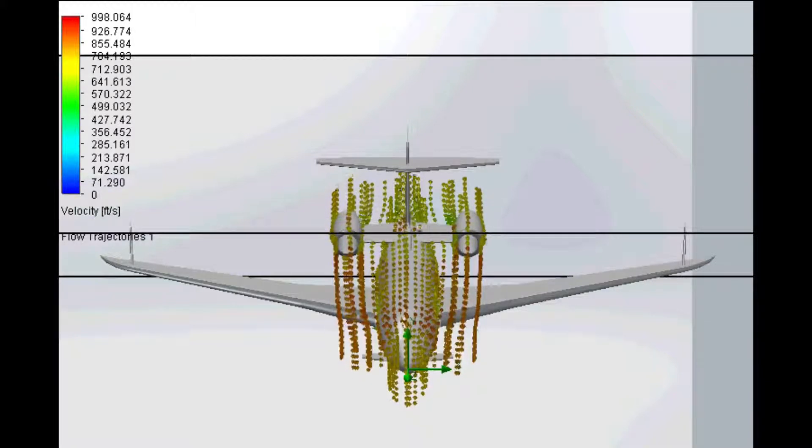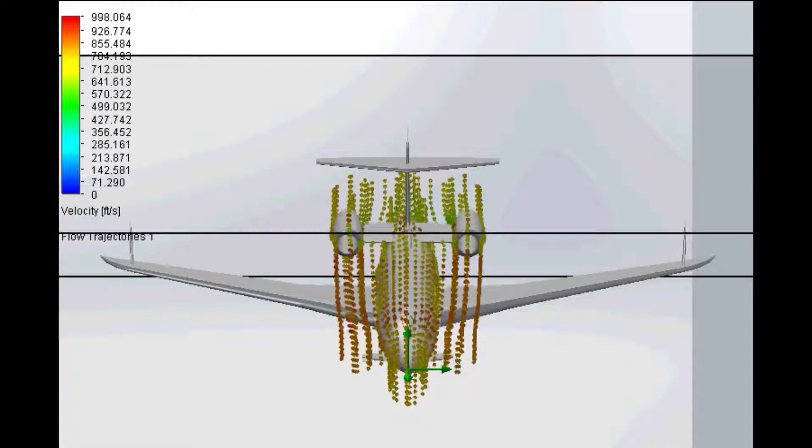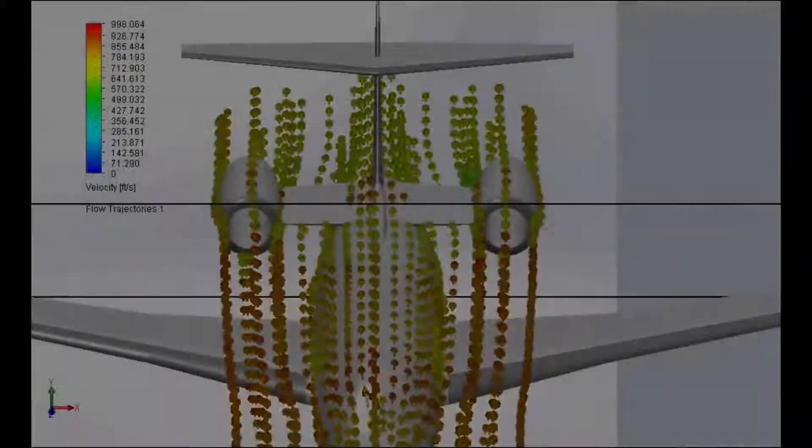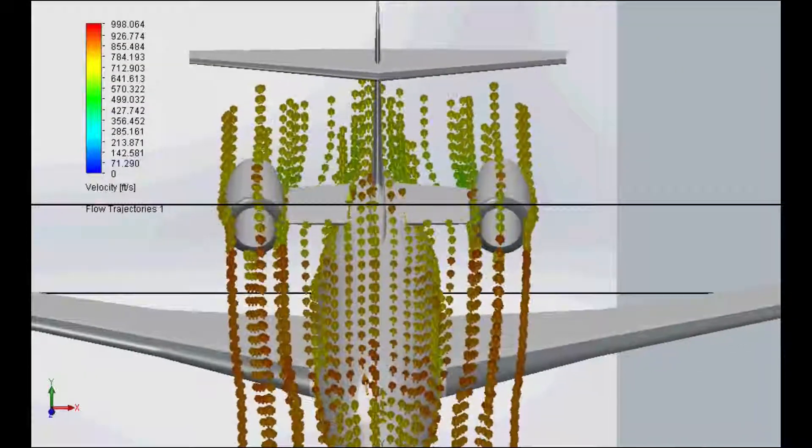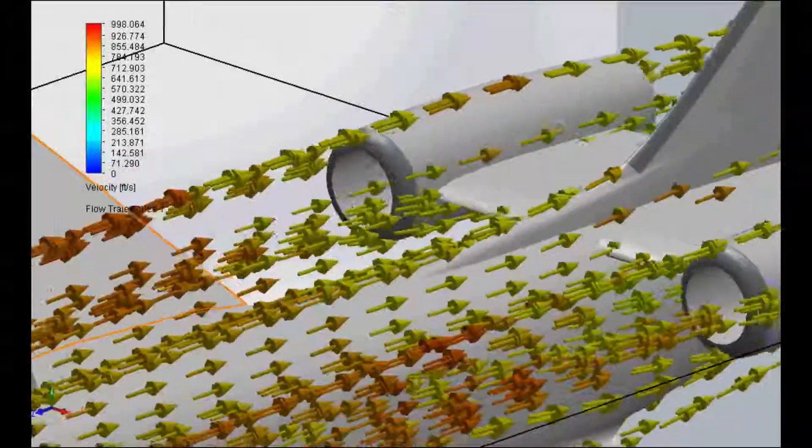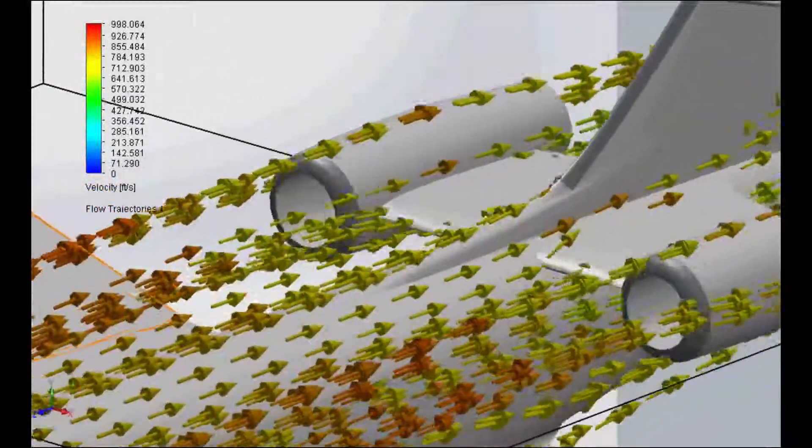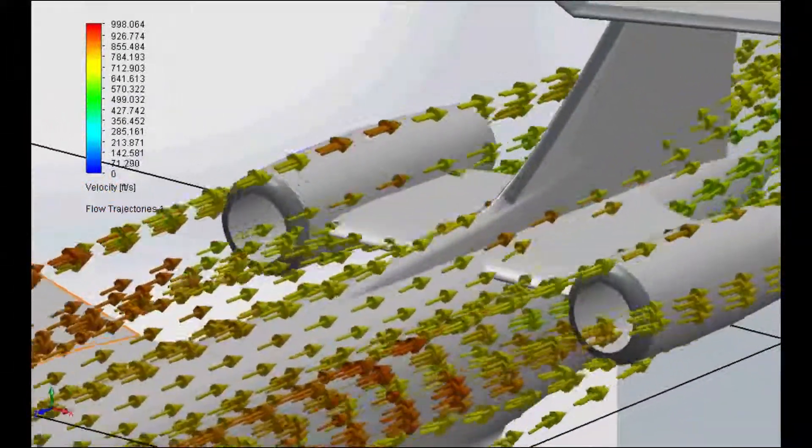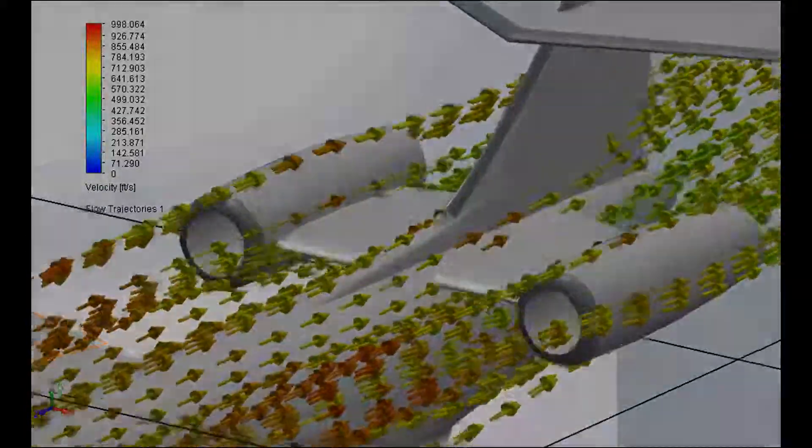And now we will take a look at the streamlines. Keeping them orange is ideal, so there's not nearly as much green as the previous streamline videos, as you can tell, keeping the flow very fast, which is ideal.